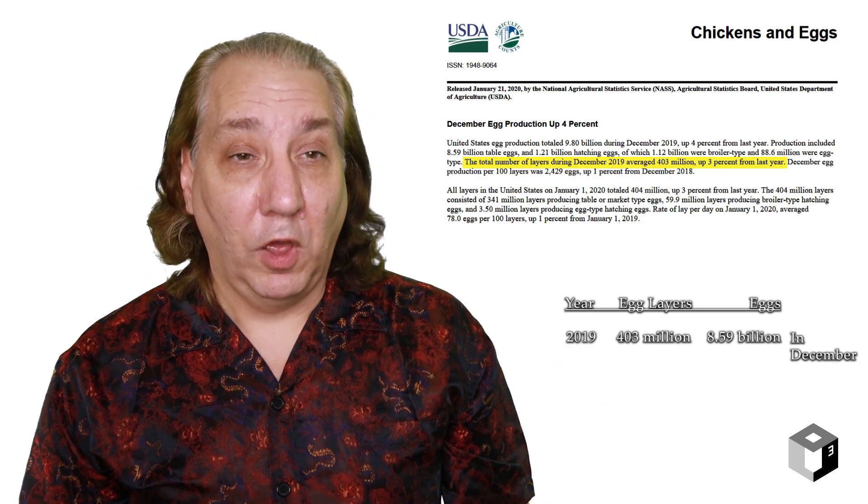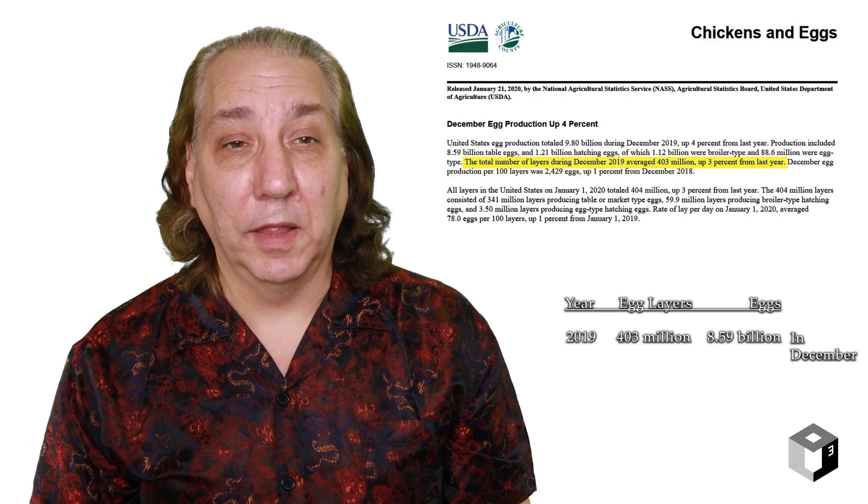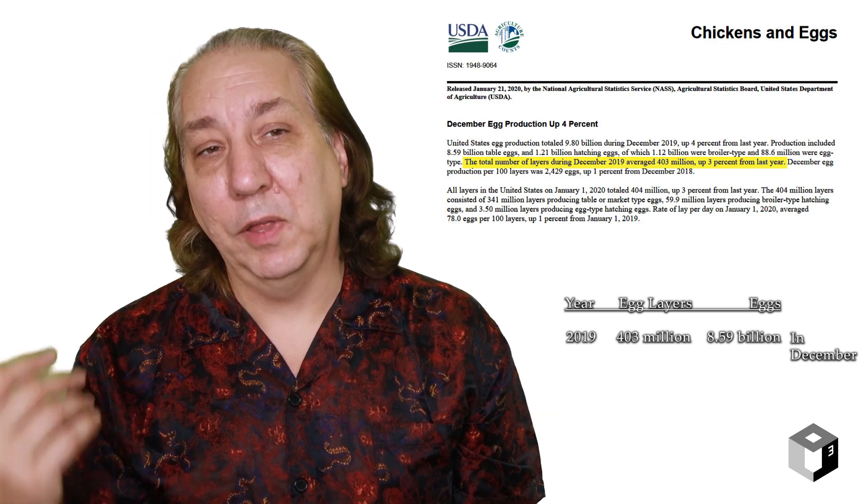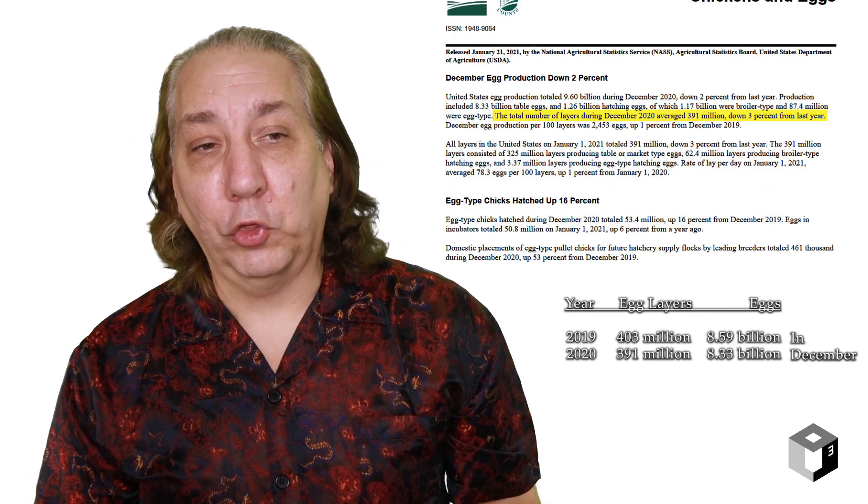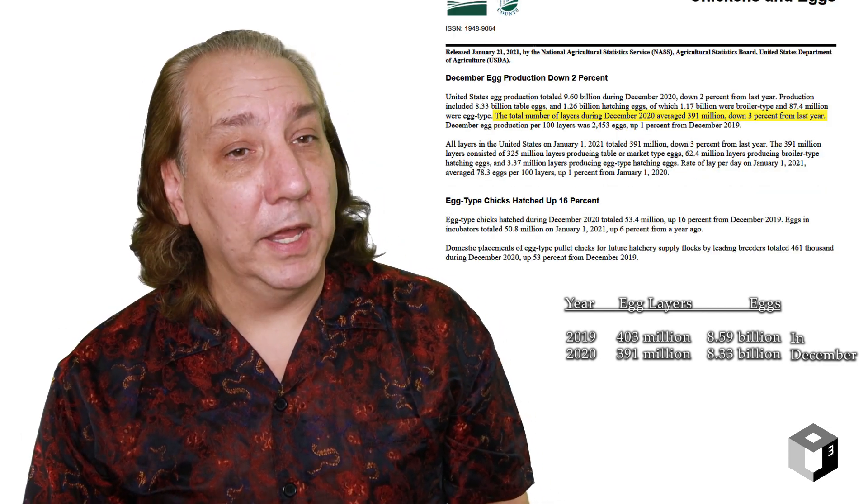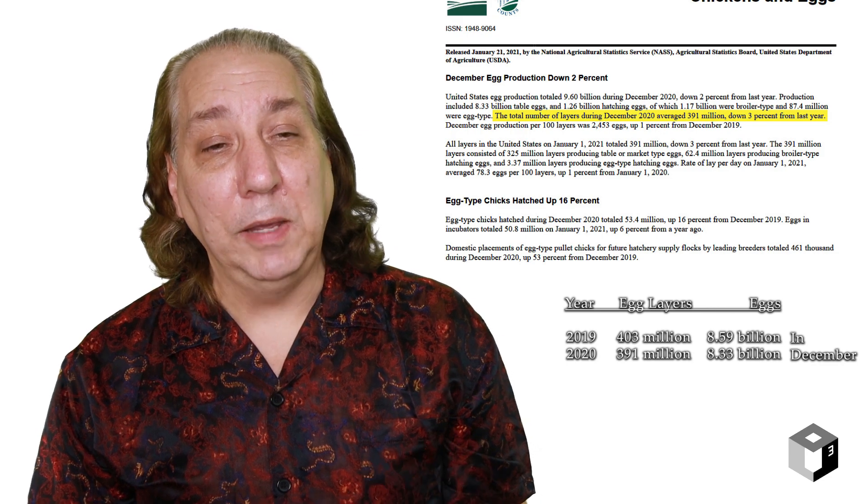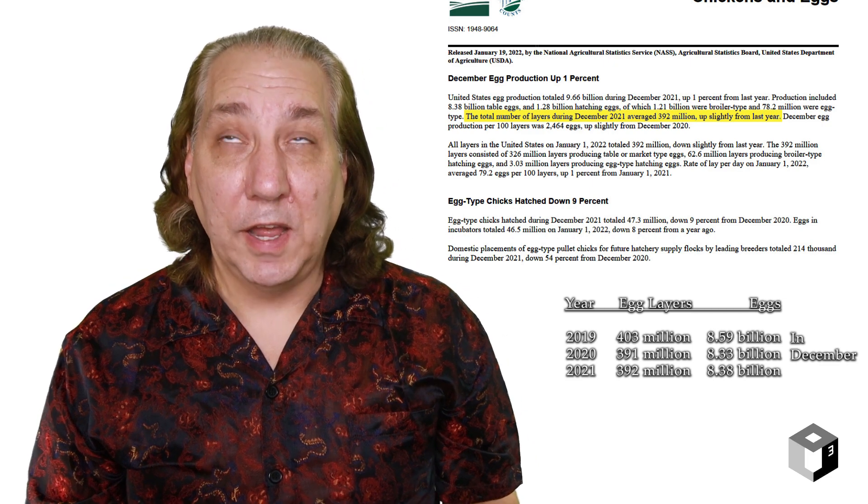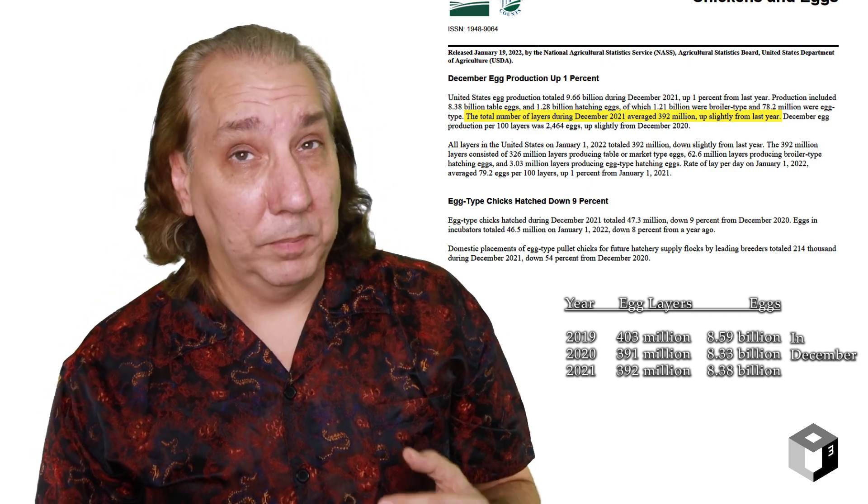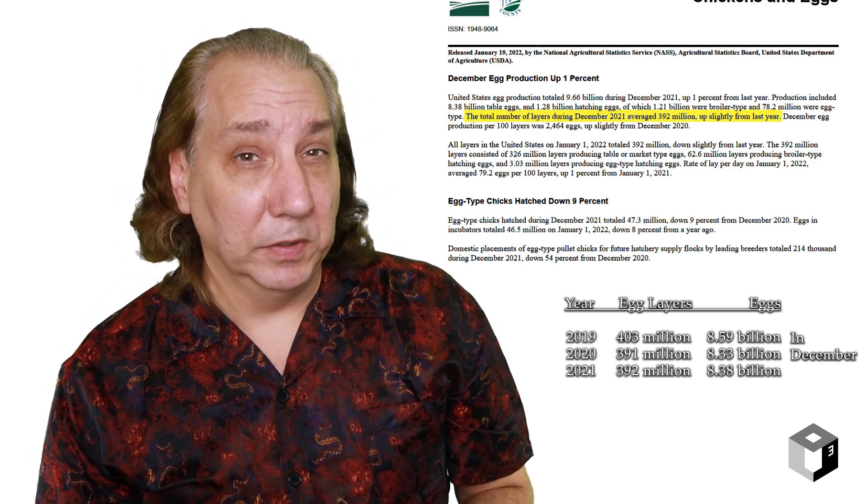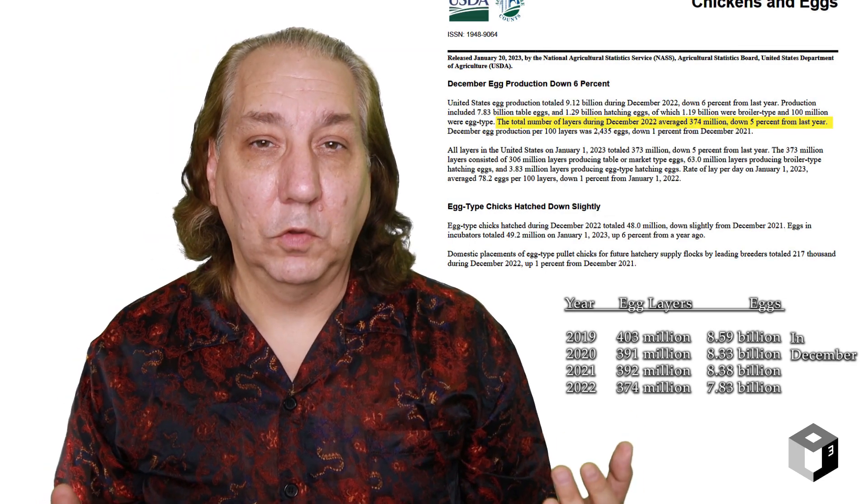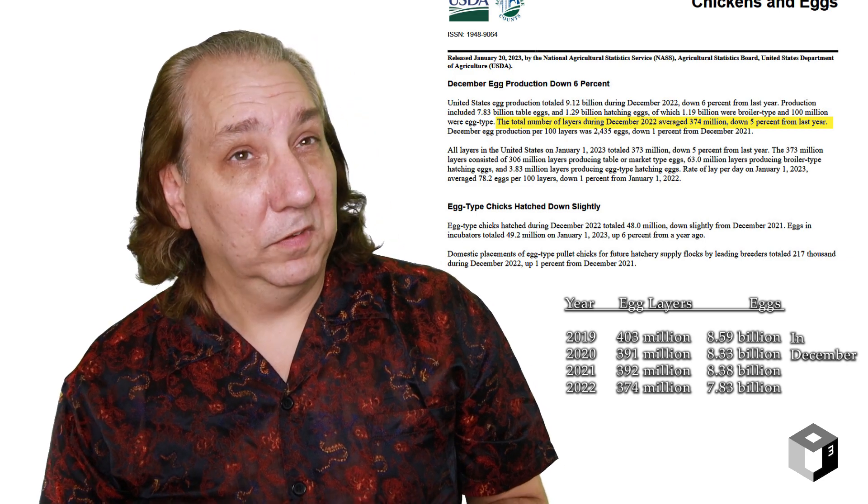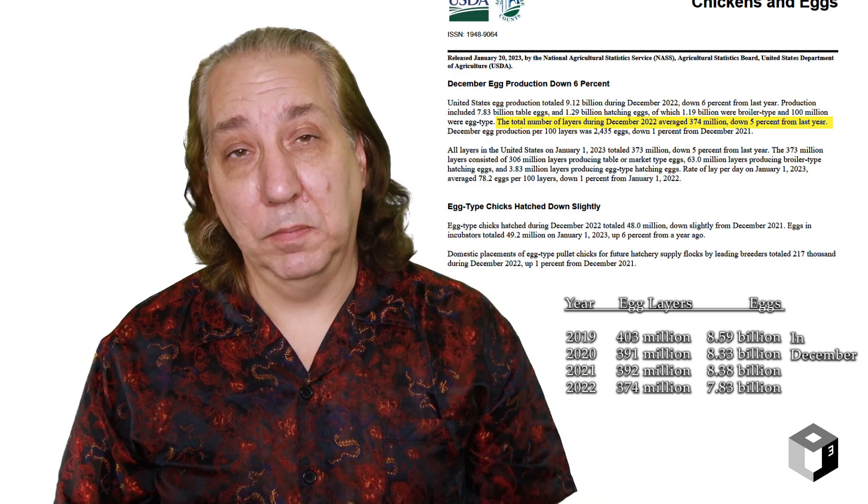In 2019, we averaged 403 million egg layers. That was up 3%. We had 8.59 billion table eggs. In 2020, we averaged 391 million egg layers, which equaled about 8.33 billion table eggs. In 2021, 392 million, which equaled about 8.38 billion eggs. And that brings us to 2022, where we totaled 374 million, which was 7.83 billion table eggs.